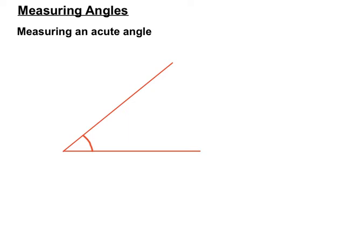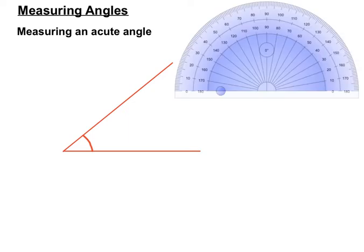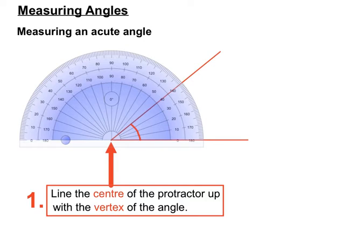So here's an acute angle here. We'll need a protractor to measure that angle. Step one is to line the center of the protractor up with the vertex of the angle. So see the corner of the angle there, it's lined up with the very center base of the protractor. That's step one.